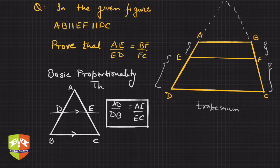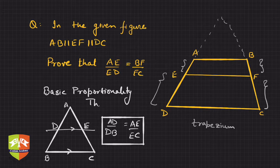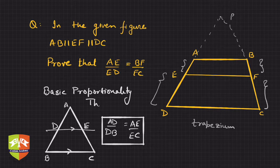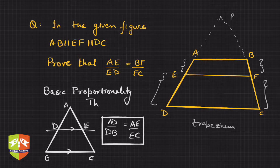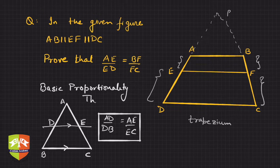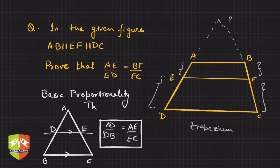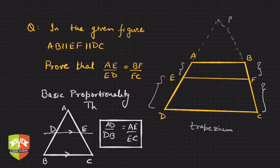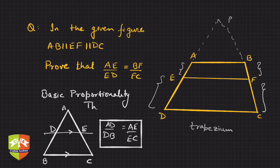There are two ways to solve this problem: either you produce DA and CB and let them meet at a point, let's say P here. This is one way of doing it, or I would prefer the other.